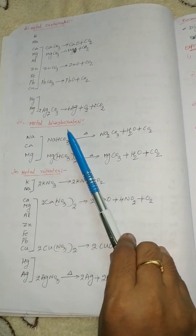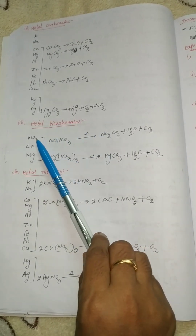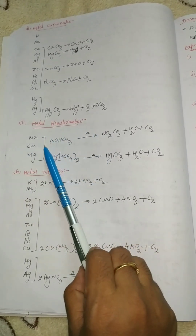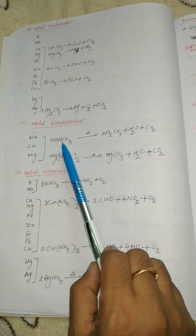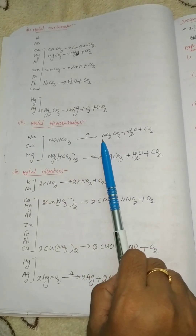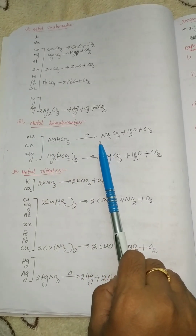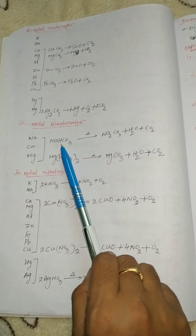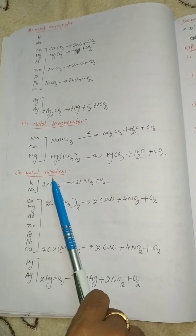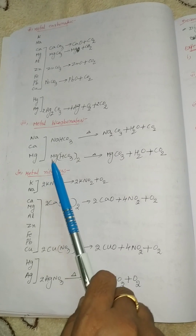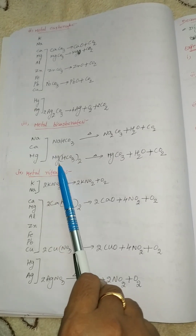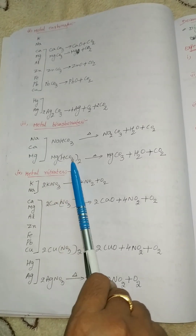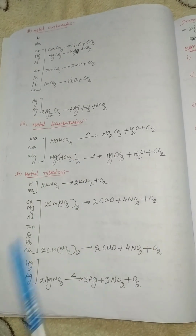Next: metal bicarbonates — sodium, calcium, magnesium. For sodium and calcium, decomposition forms Na2CO3 — sodium carbonate — plus water plus carbon dioxide. Similarly, magnesium bicarbonate also decomposes to form magnesium carbonate, water, and carbon dioxide.